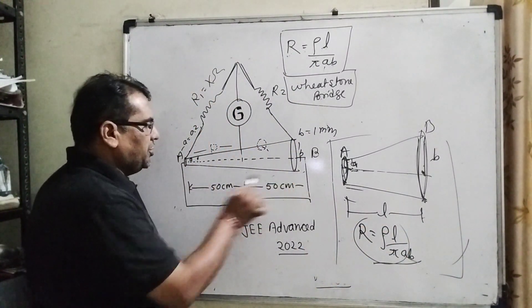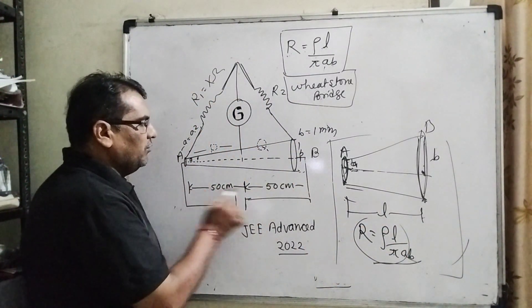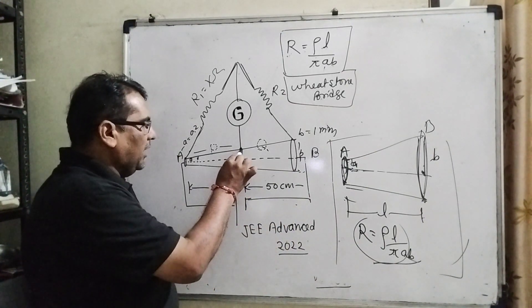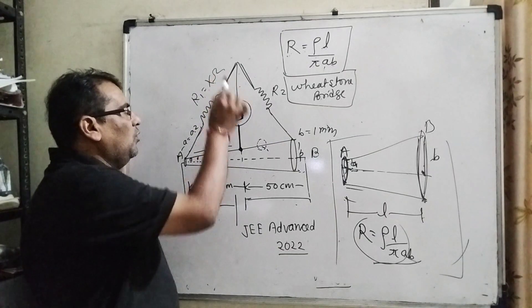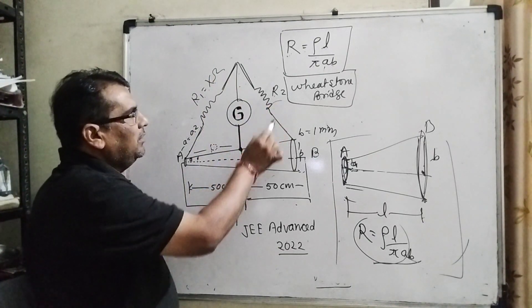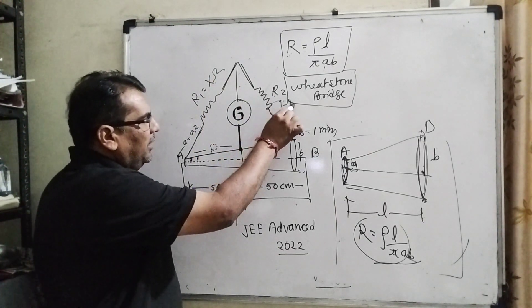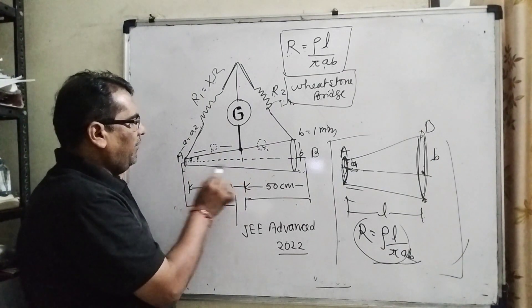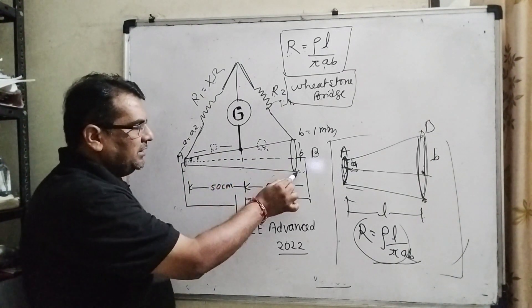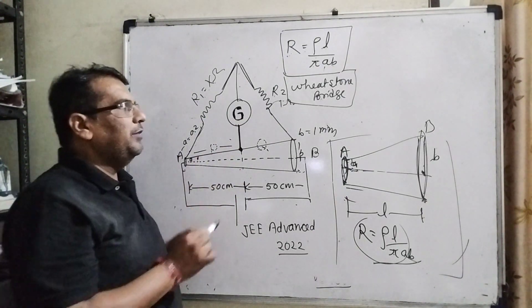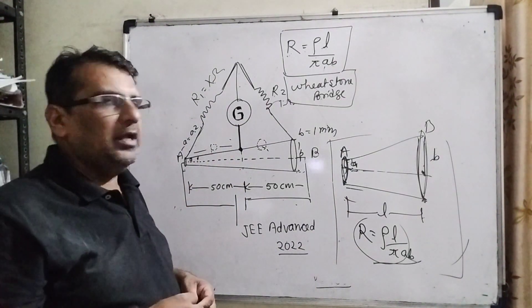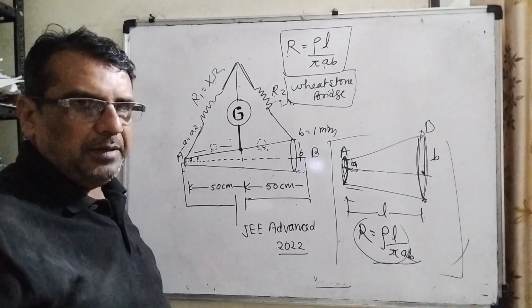Now in this question, total length is 1 meter. Exactly the middle part is connected with galvanometer. Here R1 is X ohm, R2 is given 1 ohm, and we can find out this resistance and this resistance and this resistance. By substituting the values into meter bridge or Wheatstone bridge, we can find out. So this is the basic concept.